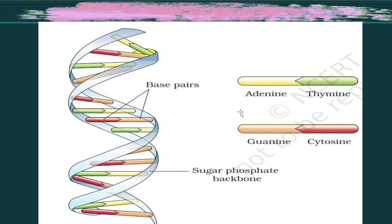The nitrogenous bases are adenine, thymine, guanine, and cytosine. Guanine and cytosine form a triple bond, while adenine and thymine form a double bond.